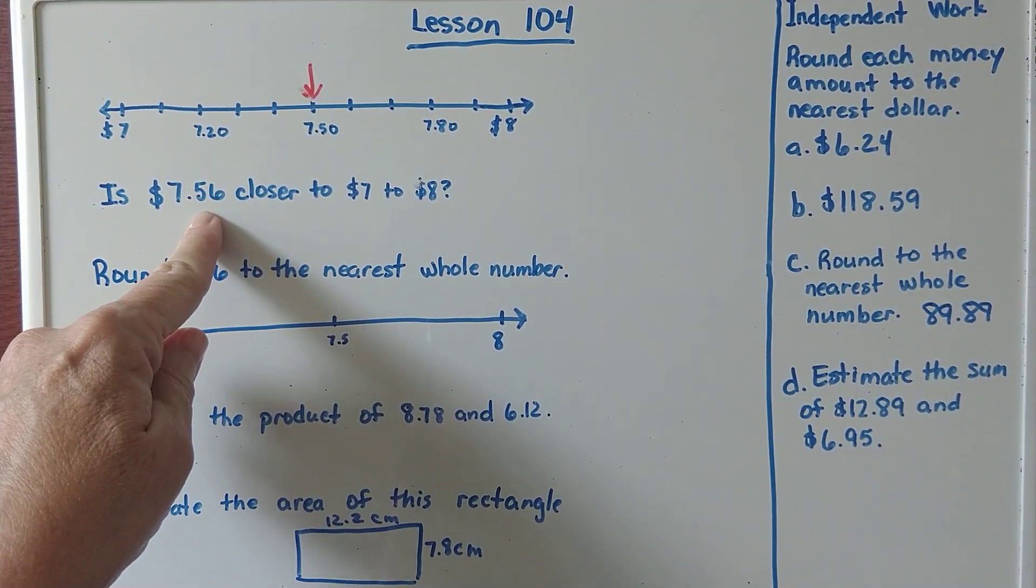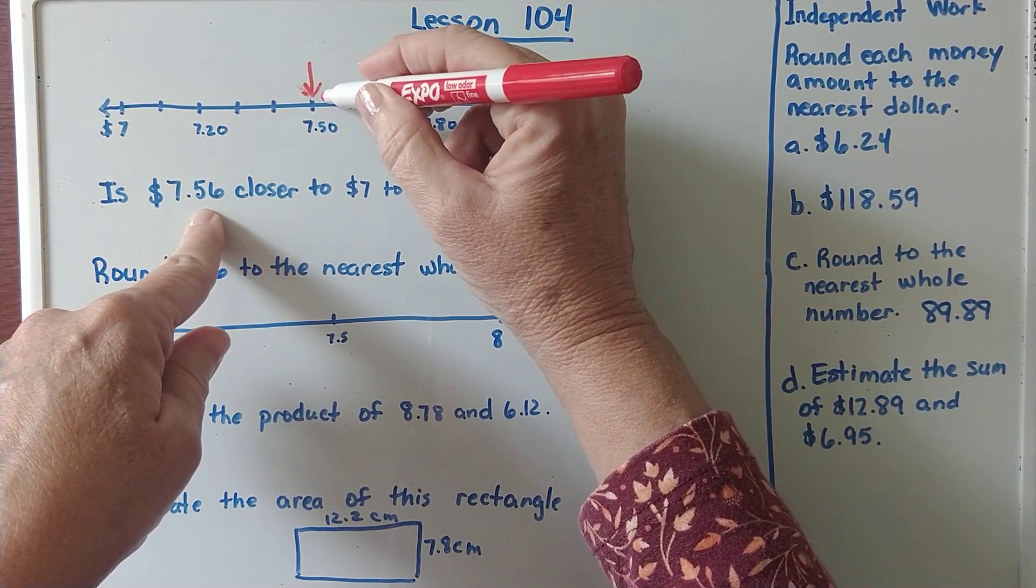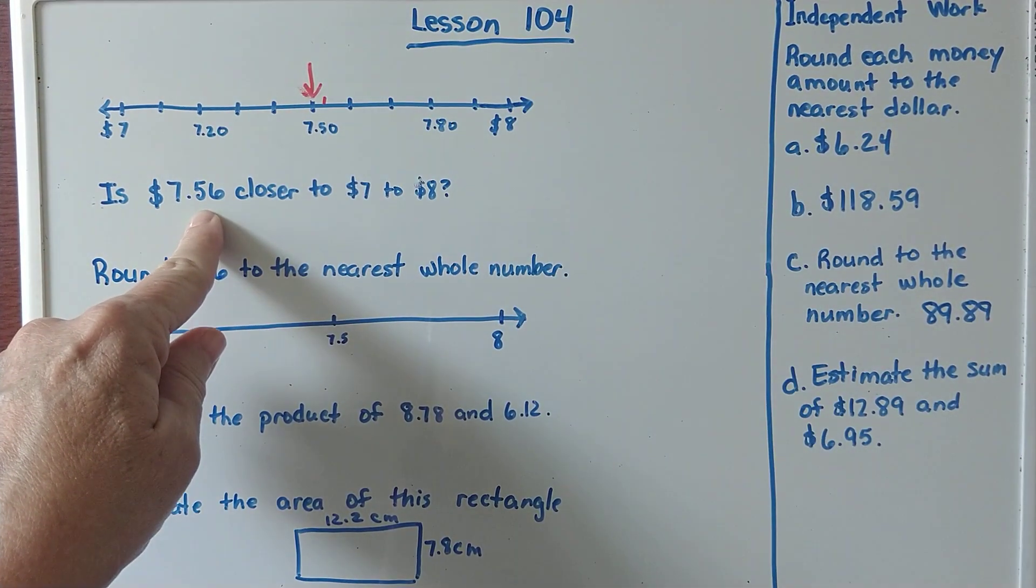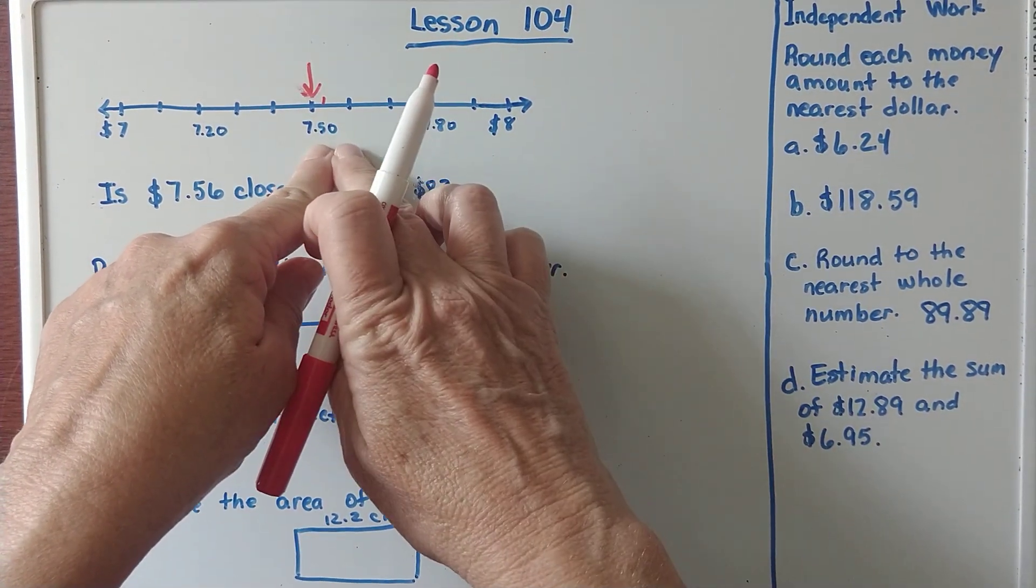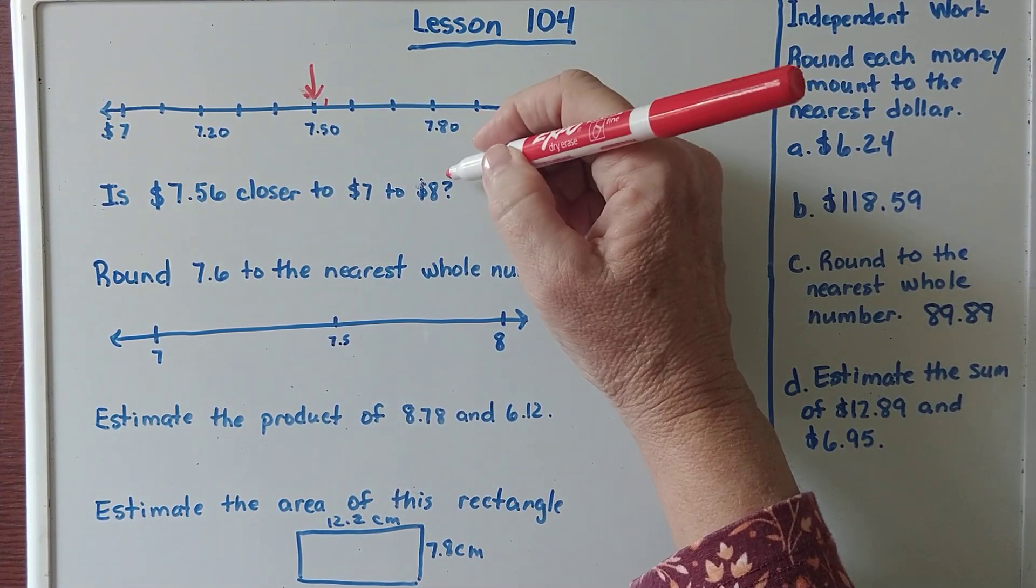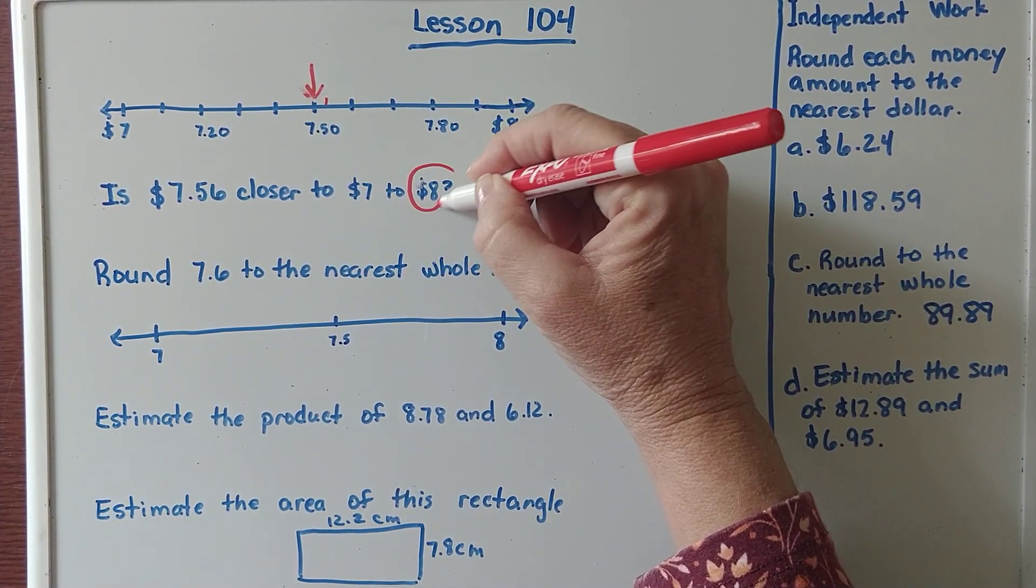Where would $7.56 be on this? I would think it would be right about here. It's a little bit more than halfway between $7 and $8. So you could say, estimating it to the nearest dollar, it would be $8.